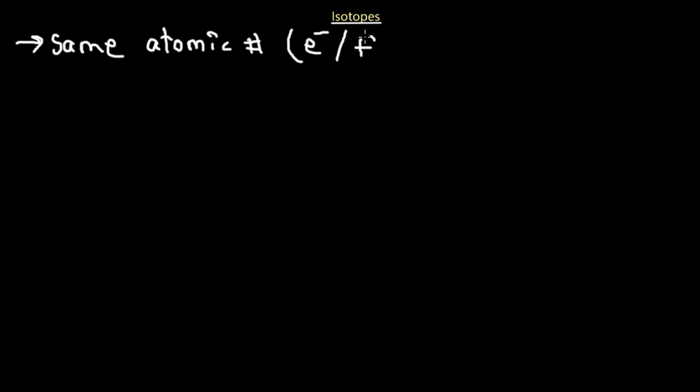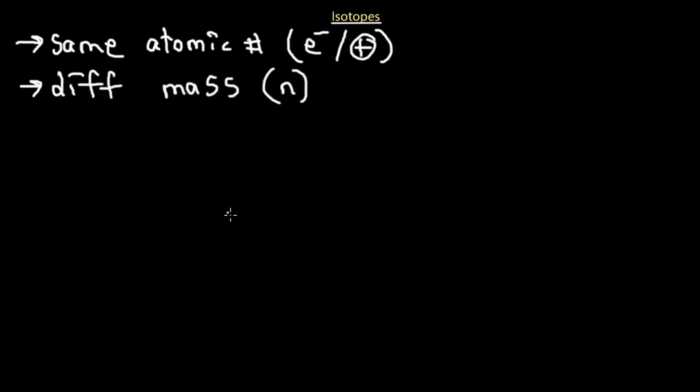An isotope has the same atomic number — meaning the same number of electrons and protons — but a different mass or a different number of neutrons. What we see on the periodic table is the average atomic mass calculated based on the percentage of isotopes that exist in nature. For example, 80% of an element might exist with an atomic mass of 16 g/mol, while other percentages correspond to other masses. You combine these, weighted by their natural abundance, to find the average atomic mass.